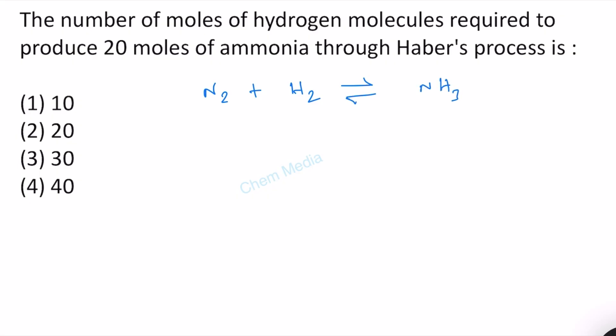We have two nitrogen atoms on the reactant side, therefore put two here. We have six hydrogen atoms now on the product side, and therefore put three here. Now the equation is balanced.